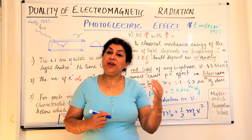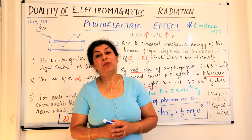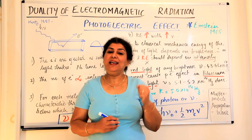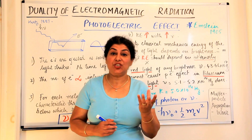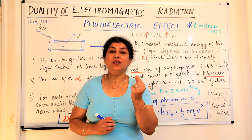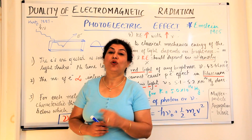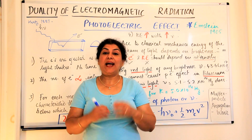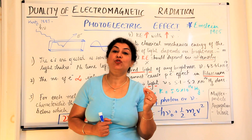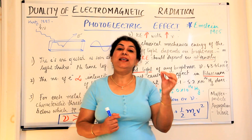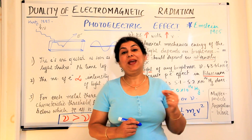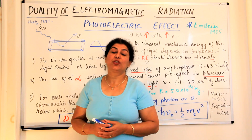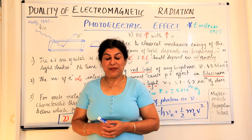In the previous video I told you about black body radiation and how Max Planck gave the concept of quantization — a quantum which was known as the photon of energy of light. The minimum energy of a photon was equal to hν, where h is known as Planck's constant and ν is the frequency of the light.